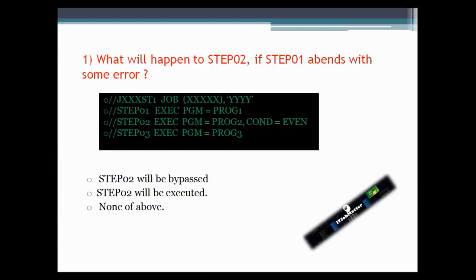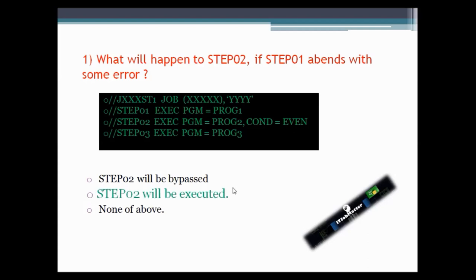The very first question asks what will happen to step two if step one abends with some error, and they have given a piece of code. If you see, in step two they have used COND=EVEN, and whenever you use COND=EVEN, even if the previous step gets an abend, the following step will still get executed. So the correct answer is: step two will get executed.